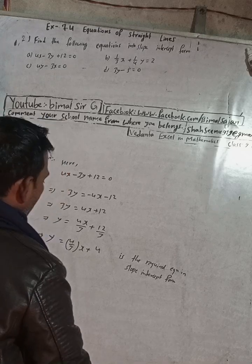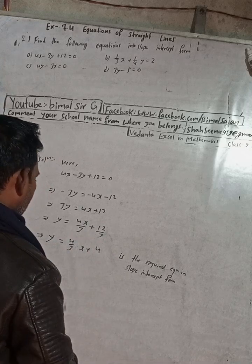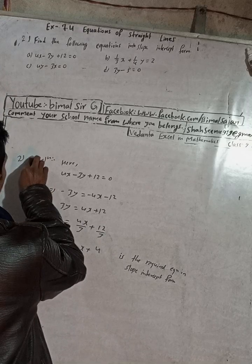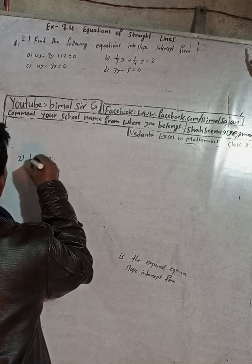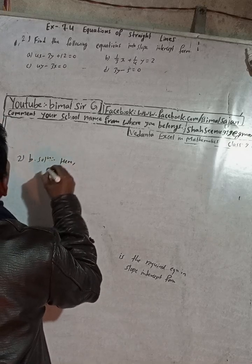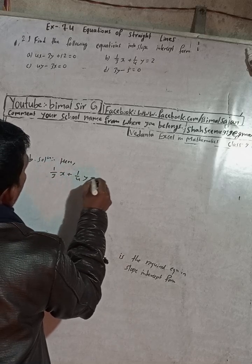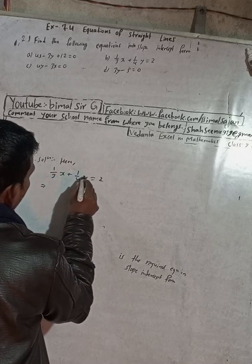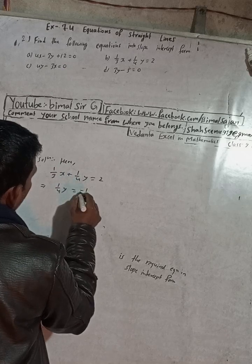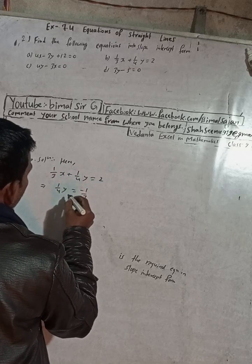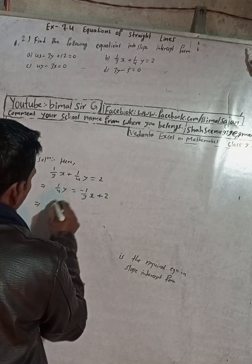Now number b. Question b: 1/3x + 1/4y = 2. You can do, keep 1/4y on the same side, take 1/3x to this side, it becomes -1/3x, and this is on the right side, so +2. Now our target is to put y here and multiply.